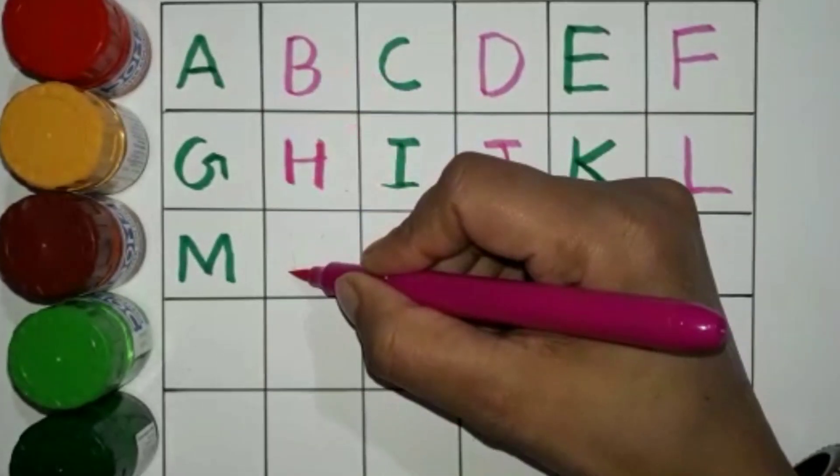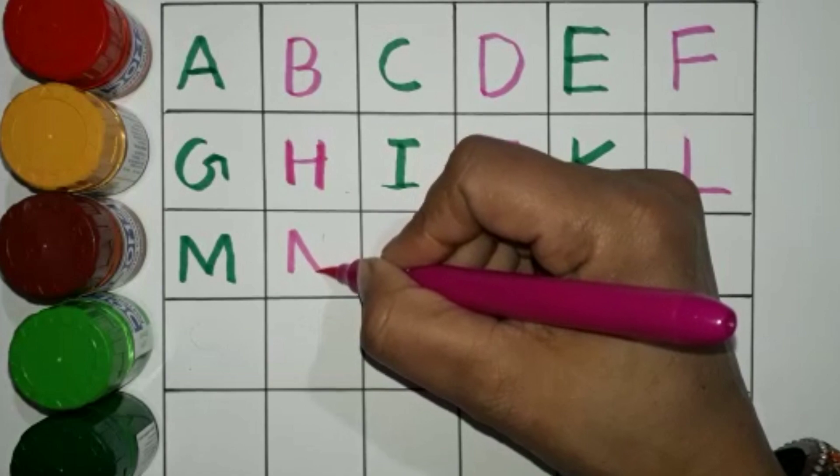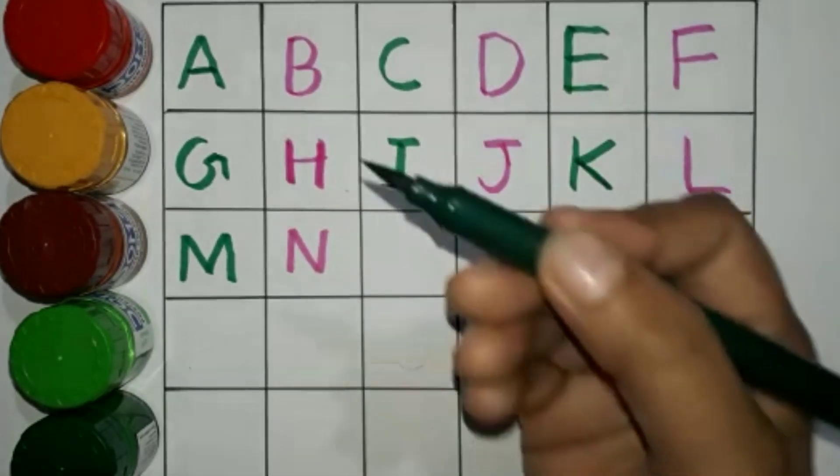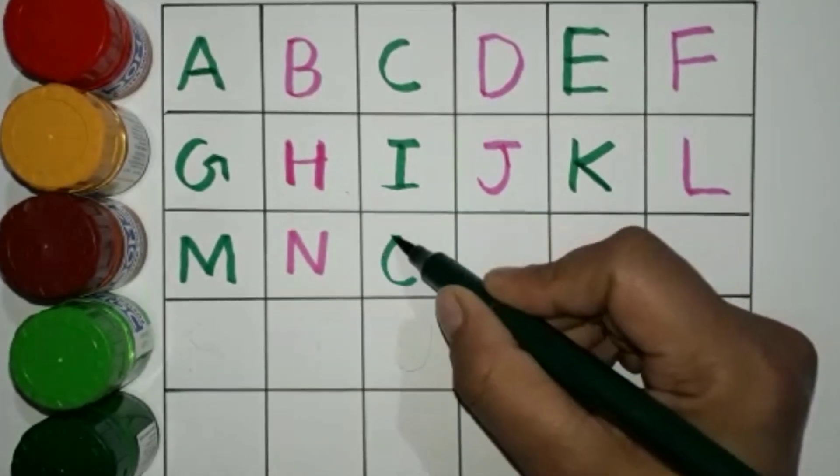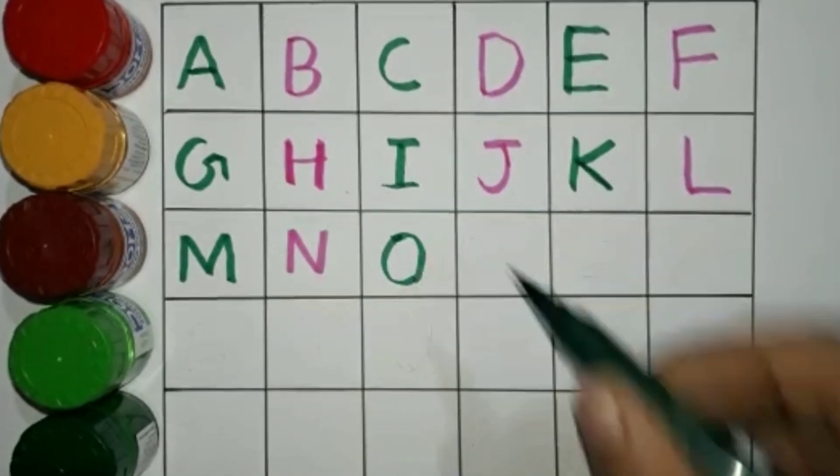Pink color. N. N for Nest. Green color. O. O for Orange.